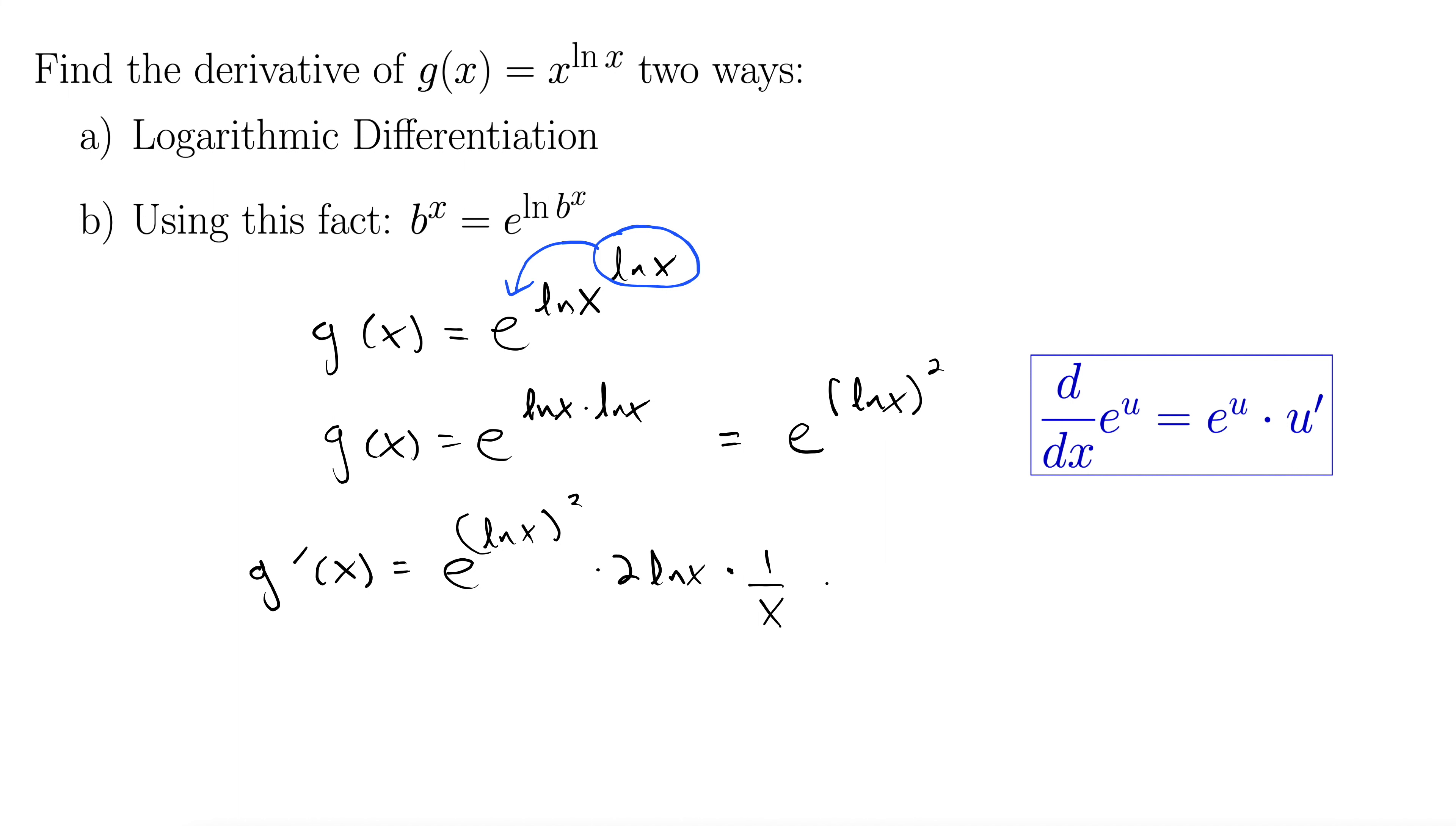Well now we just have some cleanup work to do. I'm going to rewrite this e to the natural log of x squared again. I'm just going to back out of what we did before so I'm going to write it as e to the natural log of x to the power of natural log x. I'm just undoing the steps we did here to get into this predicament. Alright all that times 2 natural log x and we can write this as all over x.